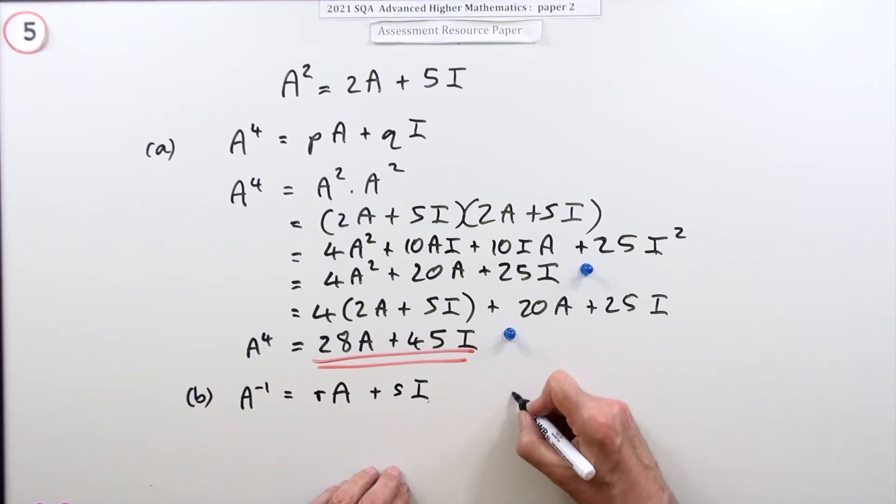Well there's two ways you could go about it. Both of them are going to involve this fact: A times its inverse is equal to I. So you could either...